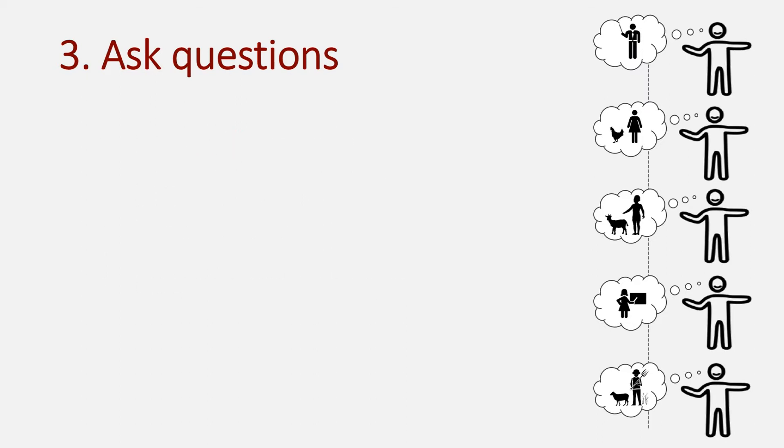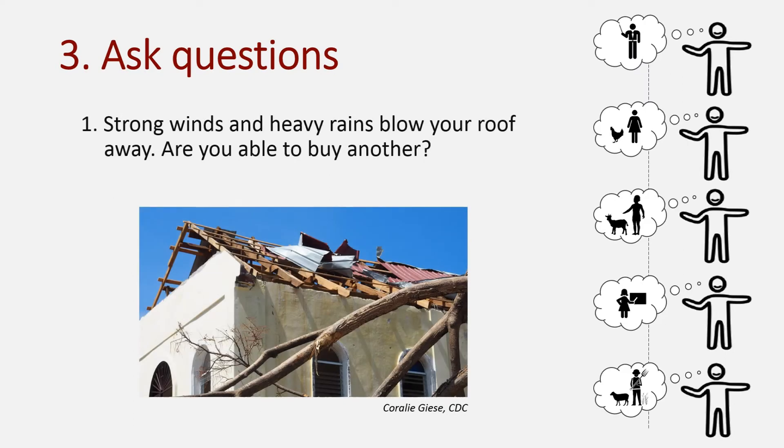In the first question, you explain that strong winds and heavy rains have blown your roof away, and ask which players will be able to buy another. Only people with enough expendable income or savings will be able to do so.